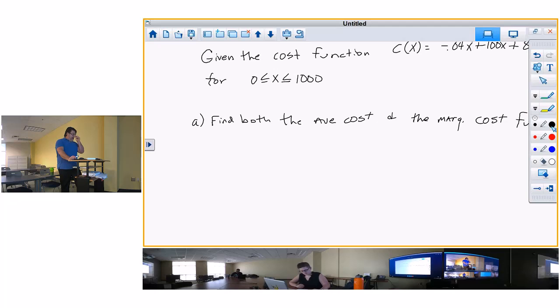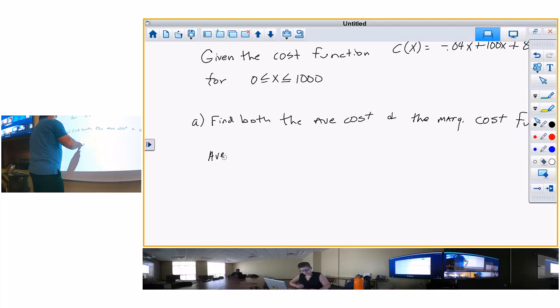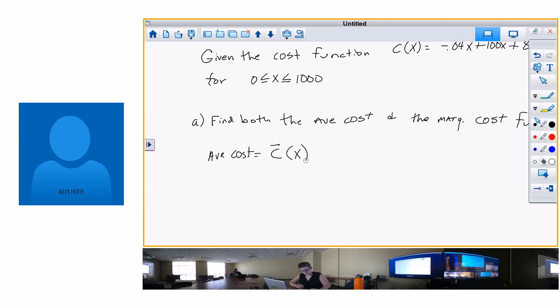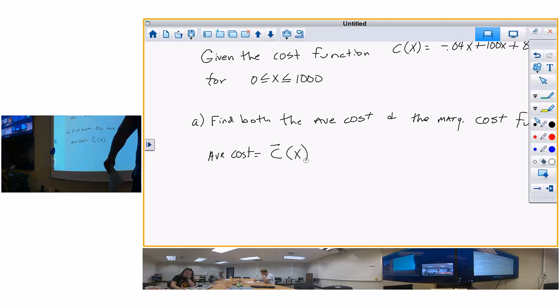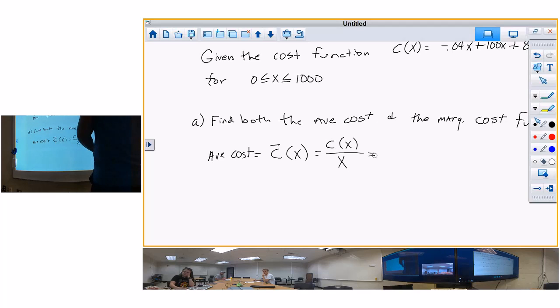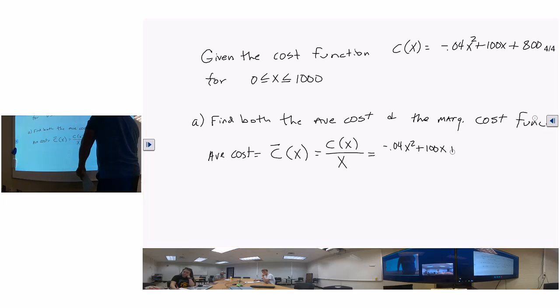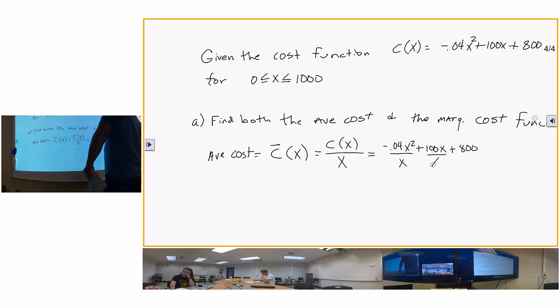And the last one is cost. Given the cost function c(x) equals negative 0.04x squared plus 100x plus 800, where x is greater than or equal to zero, less than or equal to 1000, so you're talking about the cost of zero to a thousand units.